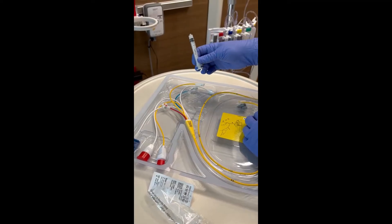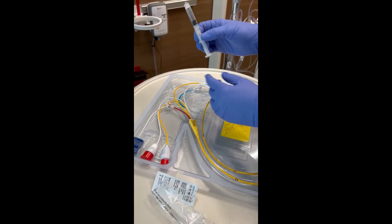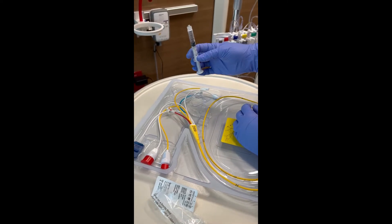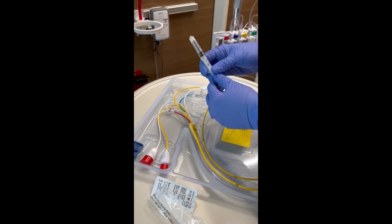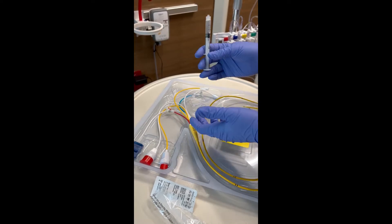This is the syringe that comes with the Swan. It will only draw back a milliliter and a half of air. That's the limit for this balloon. So you always want to make sure that your syringe locks and it's not just a plain three milliliter syringe.